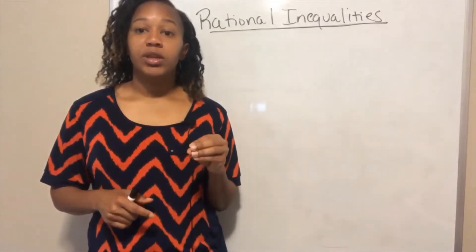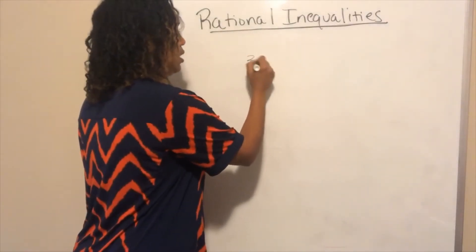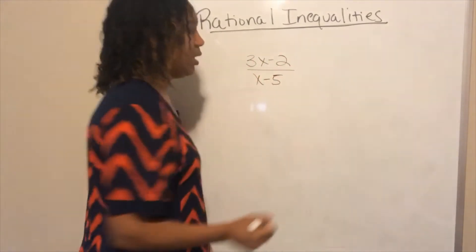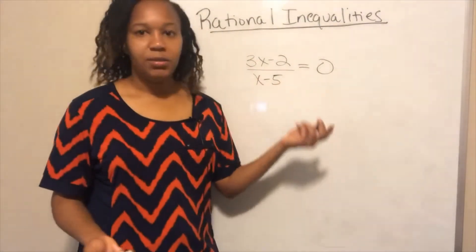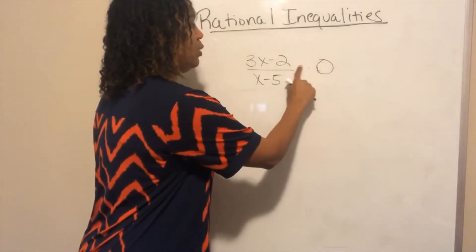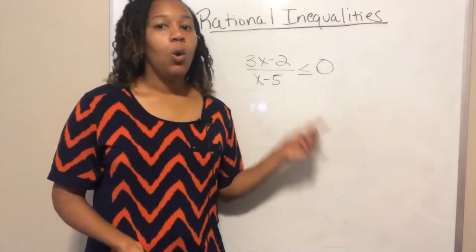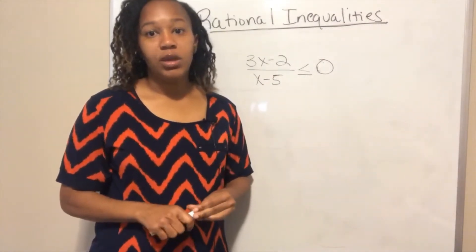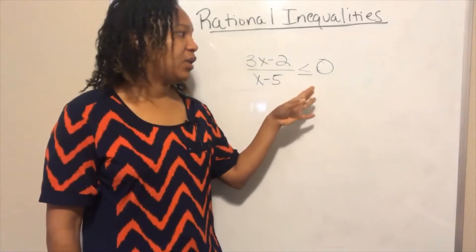The term rational means fraction of polynomial. So we first have to have a fraction of polynomial — something where the numerator is a polynomial and the denominator is a polynomial. If it had an equal sign, that would be a rational equation. But if we replace the equal sign with an inequality symbol — such as less than or equal to, strictly less than, greater than, or strictly greater than — then this would be a rational inequality.